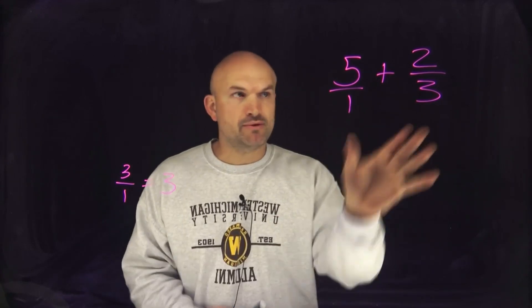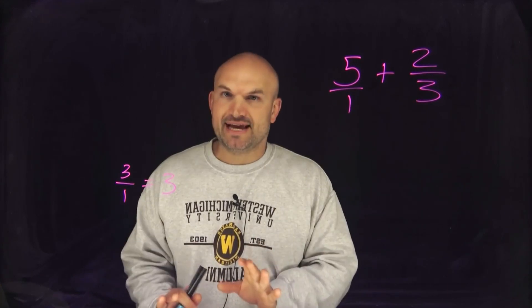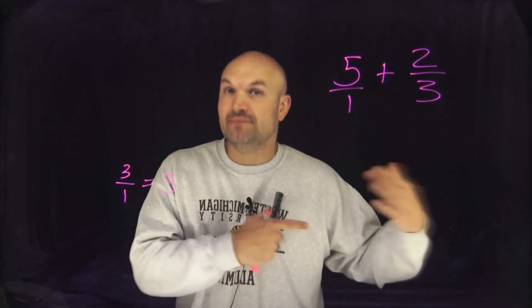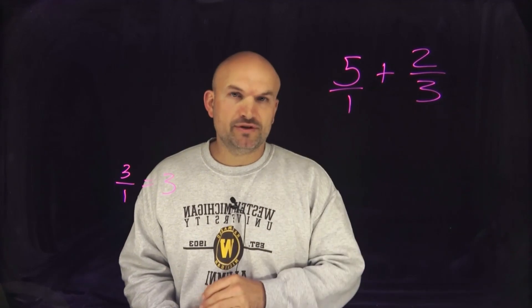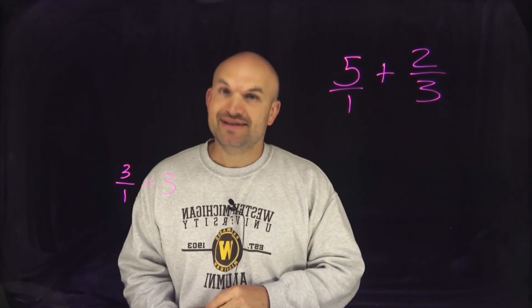And that's going to be the smallest number that 1 and 3 both divide into. Now sometimes we can just multiply the two denominators, and yeah that does work, but not always. A lot of times what you want to do is list the multiples of them. But in this case hopefully you can recognize that 1 divides into 3 three times, and 3 divides into 3 one time.